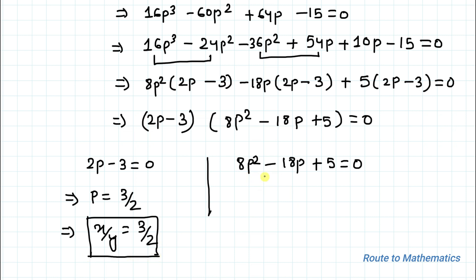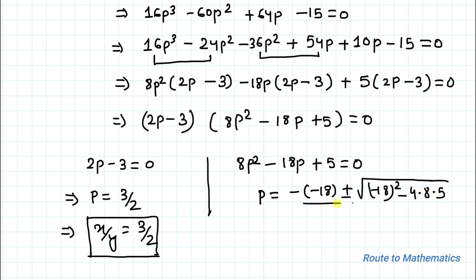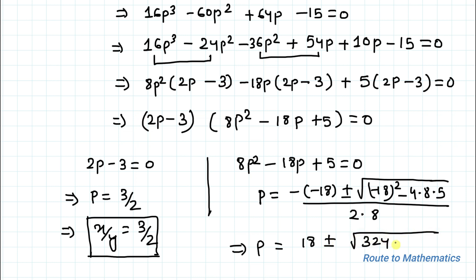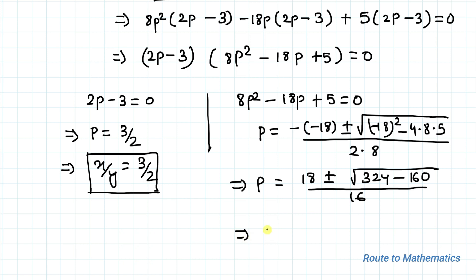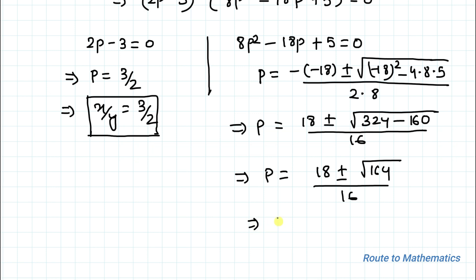For the quadratic factor 8p² - 18p + 5 = 0, we apply the quadratic formula: p equals (18 ± √(18² - 4×8×5)) divided by (2×8). This gives p equals (18 ± √(324 - 160)) divided by 16, which simplifies to p equals (18 ± √164) divided by 16.